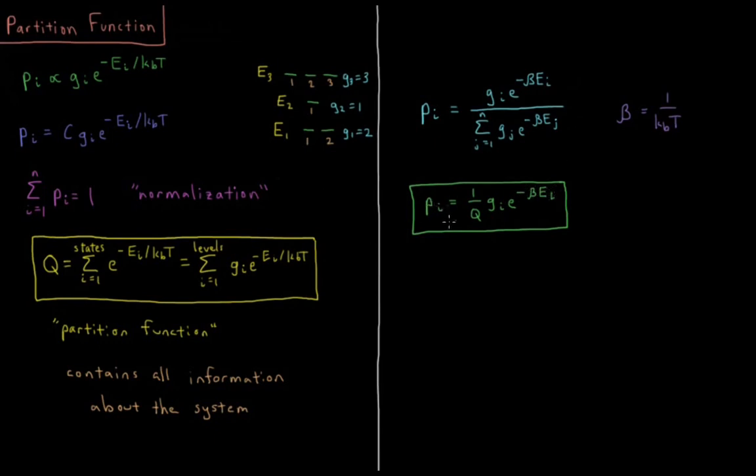Now we know what the probability of the system being in each energy level is, and we can use that to calculate the average energy of the system and the average value of any other property. Next we're going to take a look at how to use the partition function to calculate the average energy of the system.